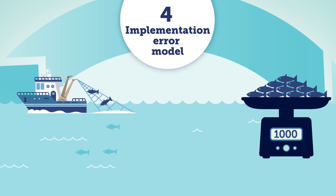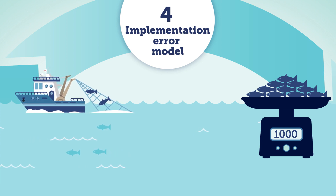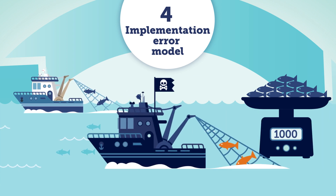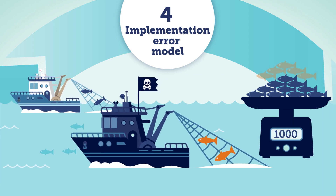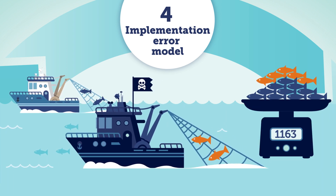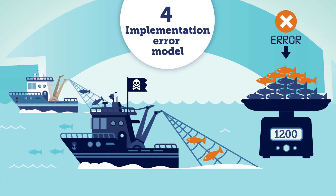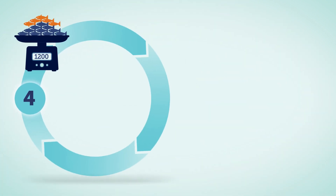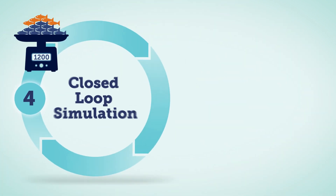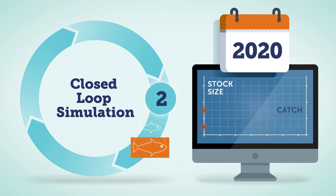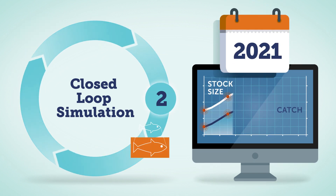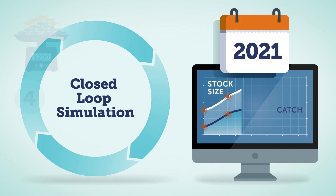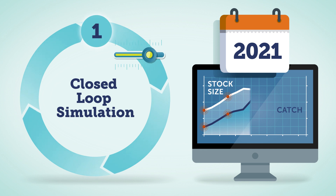The fourth step simulates on-the-water implementation of the harvest strategy. In this so-called implementation error model, additional bias is added — for example, due to potential illegal or unreported catches that cause the quota to be exceeded. The cycle then completes, with the data feeding back into the operating model to simulate the next year, and so on, cycling into the future.